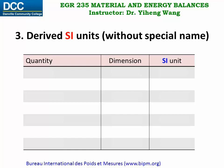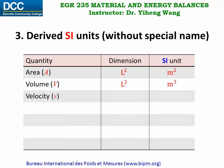Now we're going to fill in this table with some examples of SI units that are derived from the base units but do not have their own names. These units are derived for different quantities based on the definition of the quantity or following physical laws. For example, for area, its dimension is length to the second power, therefore its SI unit is meter squared. Similarly, for volume, its SI unit is cubic meter. For velocity, since velocity is length over time, its SI unit is meter per second. For acceleration, which is the time derivative of velocity, its SI unit is meter per second squared.